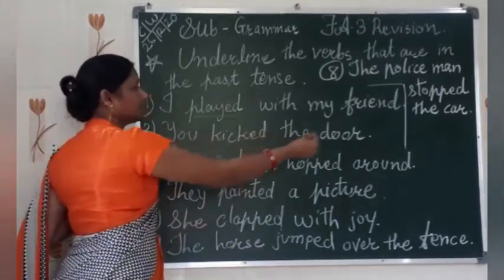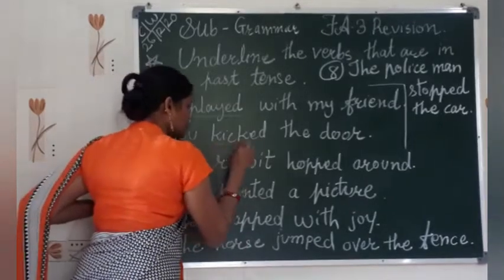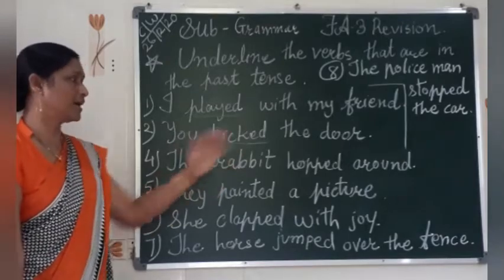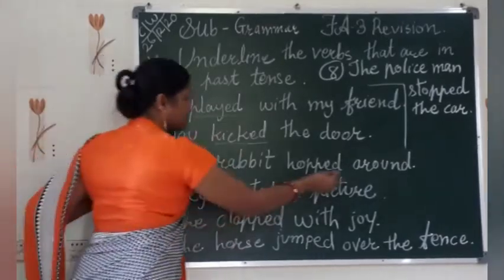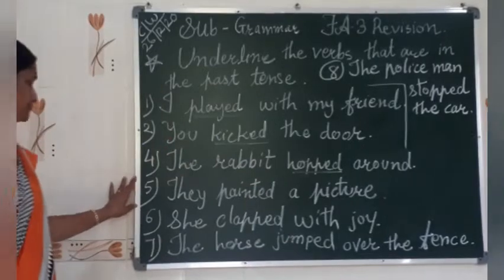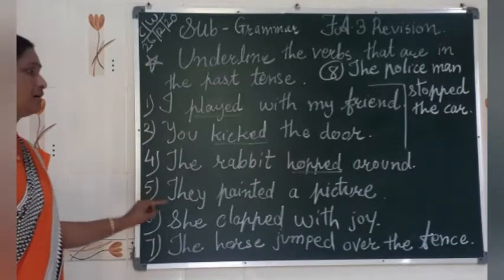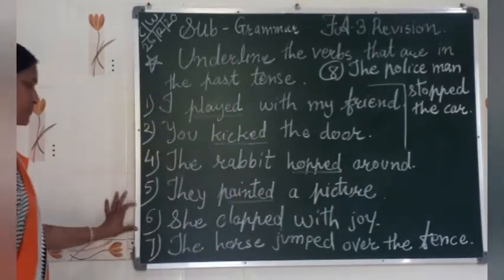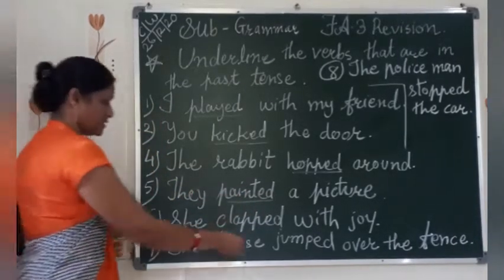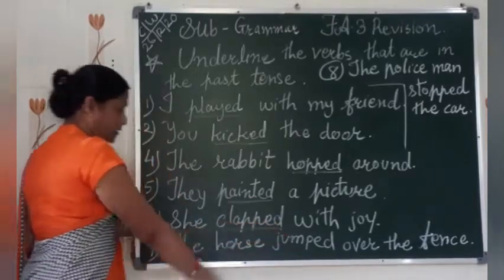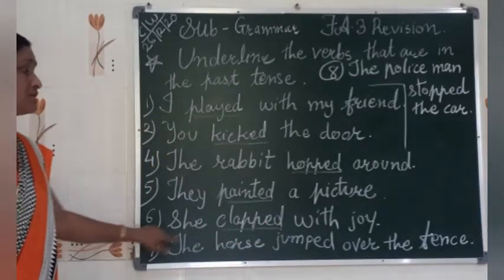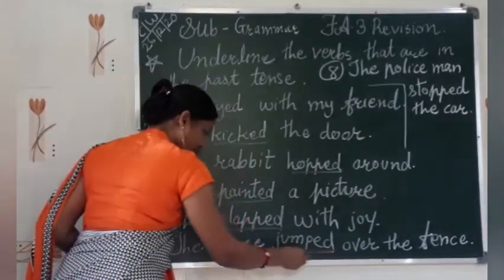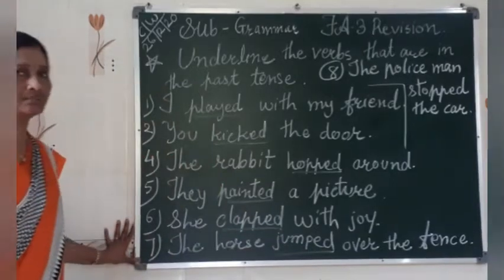You kicked the door — yes, very good, 'kicked' is in past tense form. The rabbit hopped around — 'hopped' is a past tense verb. They painted a picture — 'painted' is in past tense form. She clapped with joy — 'clapped' is a past tense verb. The horse jumped over the fence — 'jumped' is in past tense.